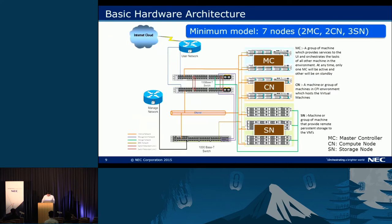I will talk about the integrated platform. This is the basic hardware architecture. We define seven nodes as a minimum model, considering the balance of availability, performance, and hardware cost. Seven nodes contain two master nodes, two compute nodes, and three storage nodes. Each server is connected by 10 gigabit ethernet cable. The master controller (MC) is used for management of this platform — it includes OpenStack components and other monitoring components. The compute node (CN) is used as a hypervisor for VMs and includes KVM.